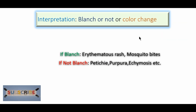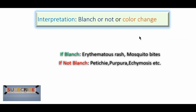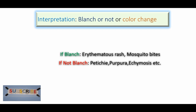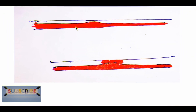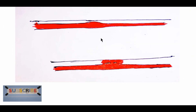Now come to the interpretation. We have to observe if it blanches with pressure or not, or if there is any color change. If it blanches with pressure, then it may be due to erythematous rash or mosquito bites. If it does not blanch with pressure, then the interpretation is petechiae, purpura, etc.